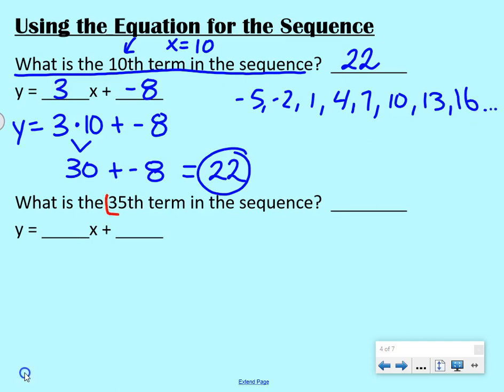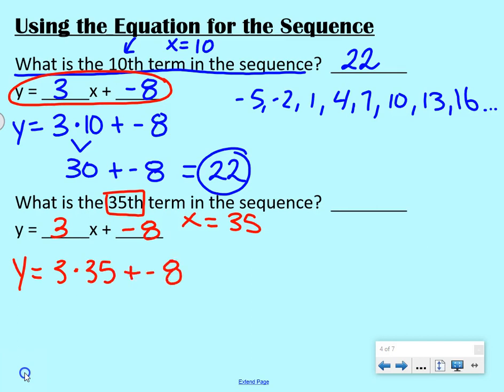However, in our next question, we want the 35th term. Do we want to add 3 35 more times? That's a lot of adding 3. When we have an equation that we can use, that makes it a lot easier. So we have y equals 3x plus negative 8. We want that 35th term, so we're saying x equals 35. y equals 3 times x, so times 35, plus negative 8. y equals 3 times 35 is 105, plus negative 8, which is really 105 minus 8. So y equals 97. So our 35th term in our sequence is 97.